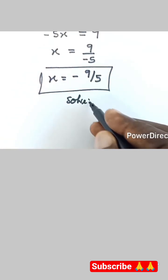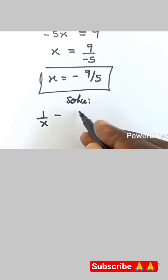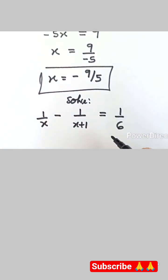Now let's solve something very similar. Let's solve this: 1 over x minus 1 over x plus 1 equals 1 over 6. So let's solve this and write your answer in the comment section.